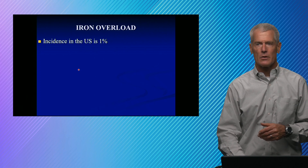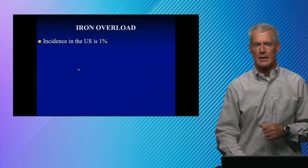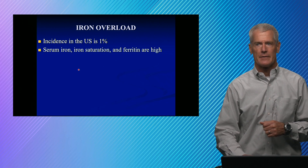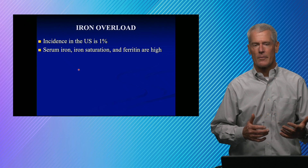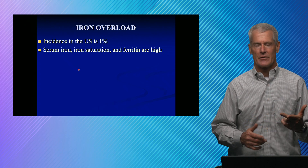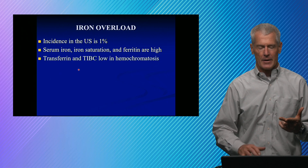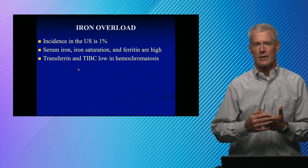In iron overload, which is less frequent than iron deficiency, serum iron is going to be high, iron saturation is going to be high, and ferritin is going to be high. In this case, the opposite happens to your transferrin — your transferrin actually goes down.